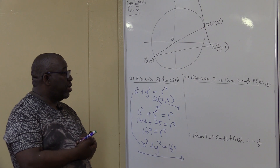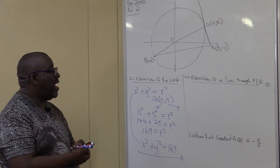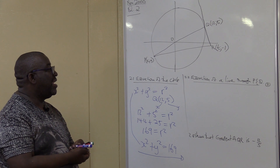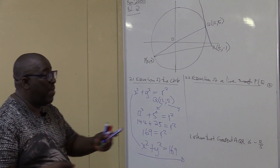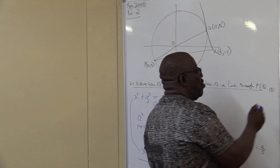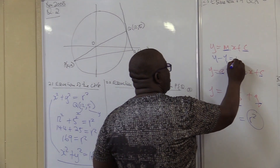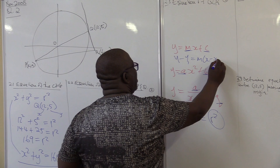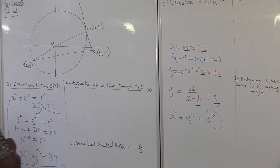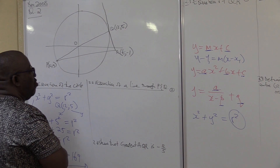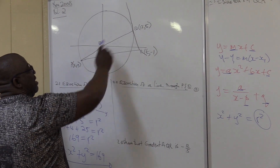Now the next question, 2.2: find the equation of a line through P and Q. A straight line uses y = mx + c, or y − y₁ = m(x − x₁). Those are the two equations we can use to find the equation of line PQ.